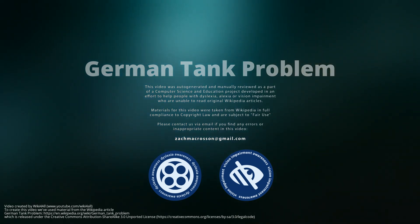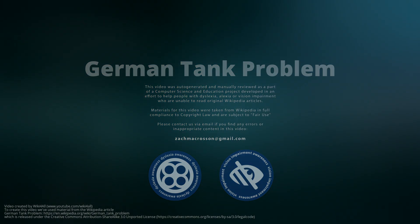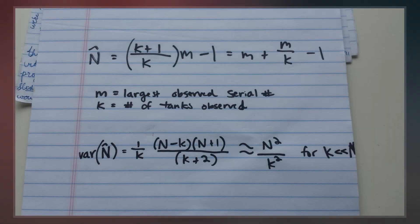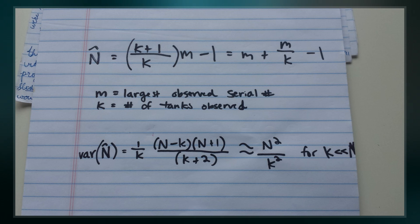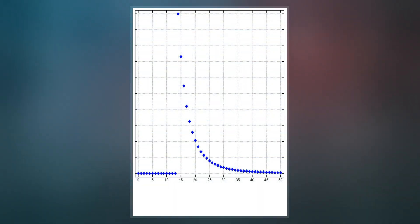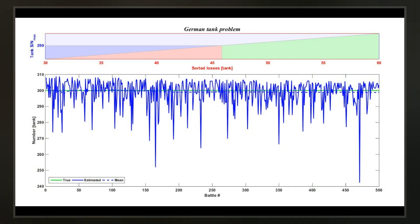In the statistical theory of estimation, the German tank problem consists of estimating the maximum of a discrete uniform distribution from sampling without replacement. In simple terms, suppose there exists an unknown number of items which are sequentially numbered from 1 to n. A random sample of these items is taken and their sequence numbers observed. The problem is to estimate n from these observed numbers.